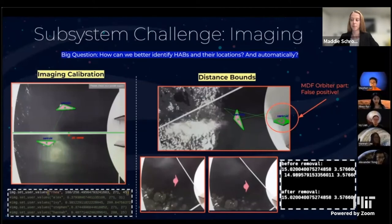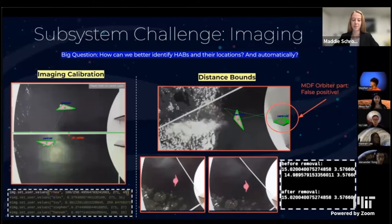We also realized we needed a way to tell the system that two photos taken at different angles are still showing the same HAB. So we used the estimated X and Y coordinates of each HAB detected and removed duplicates that were within one inch of each other.